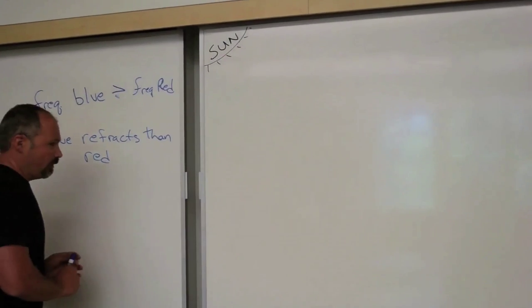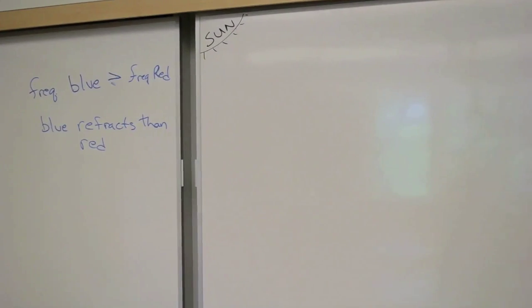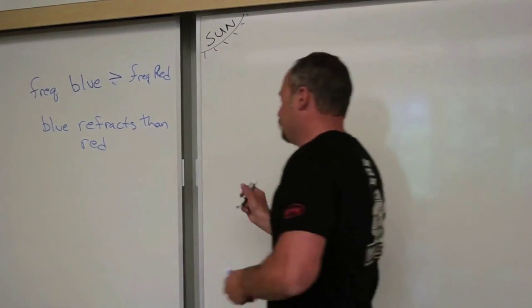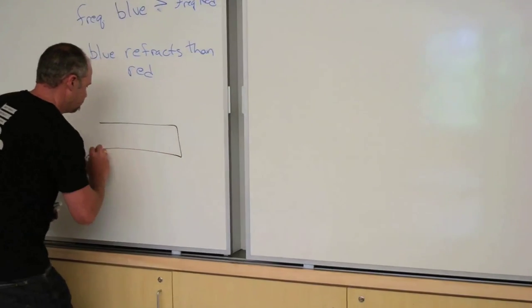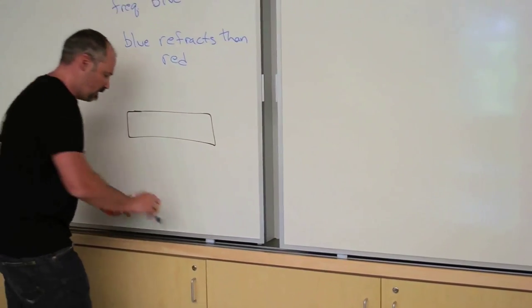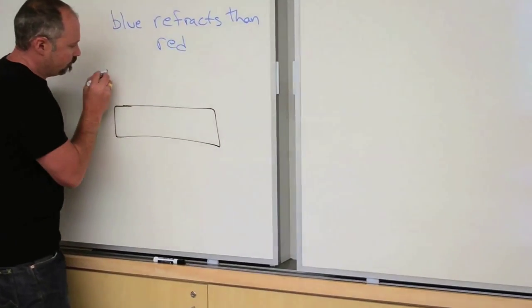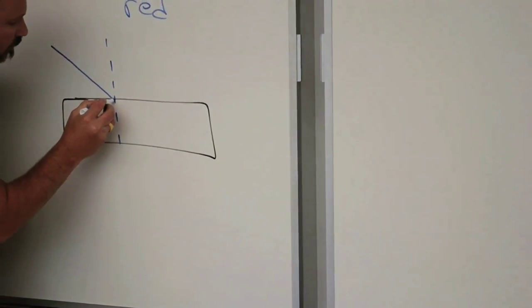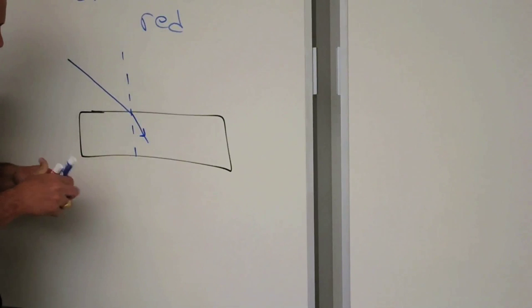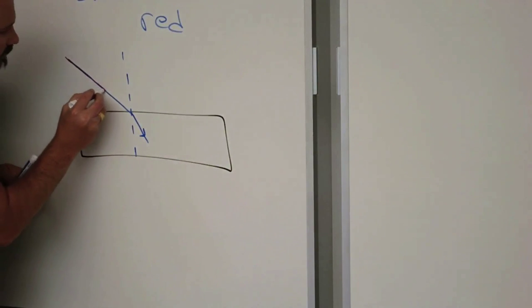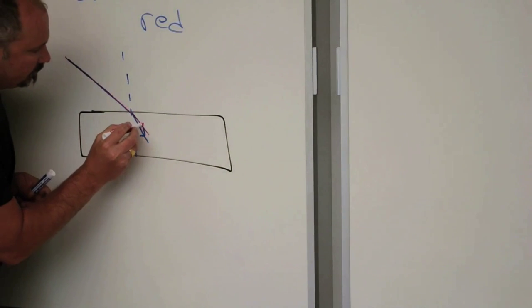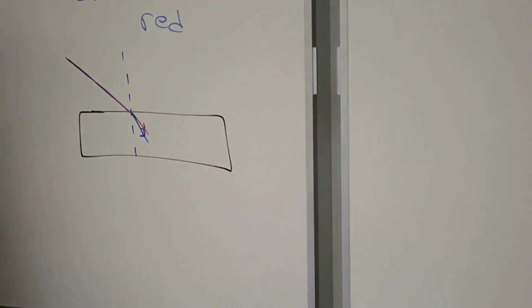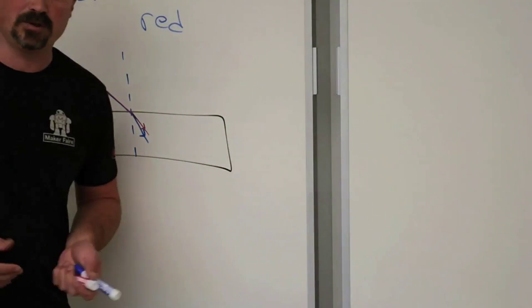And what do I mean by that? Well, if you have a surface, let's just take a surface like this, say it's glass or something. Well, blue, when it comes in here, remember Snell's Law, the blue light will refract slightly more than red light. And that's due to its higher frequency. And this is best exhibited with a prism.